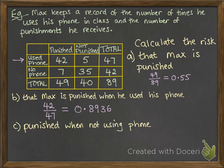All right, what's the risk that he was punished when not using his phone? So we're just going to look at this row here. We're restricting it down to only considering the times he wasn't using his phone. And he received a punishment seven times out of those, out of a total of 42 times he wasn't using his phone. So that's a chance of 0.1667.